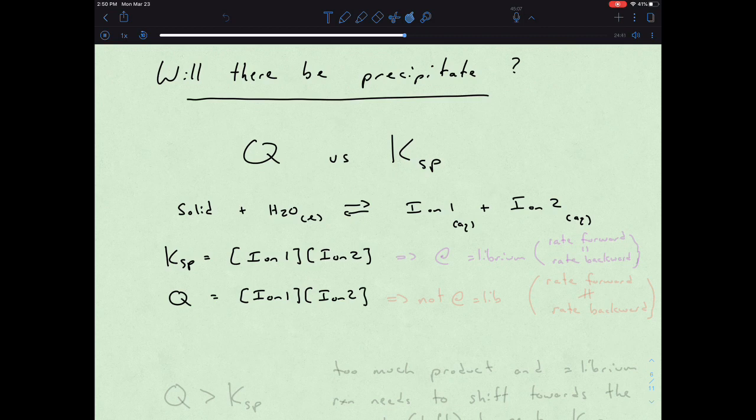The difference is that this is at equilibrium, meaning that our rate forward is equal to our rate backwards. Well, with Ksp, that's just simply now not the case.